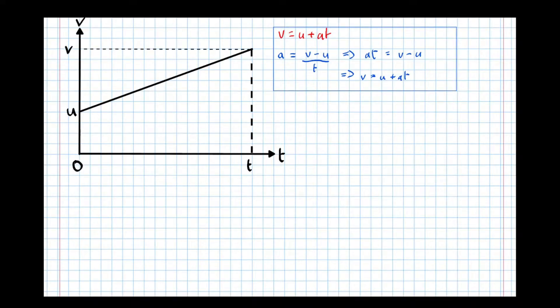So now we're going to have a look at S equals U T plus a half A T squared. With this one, we're going to need to consider the area under the graph, because on a VT graph, it's the area between the graph and the X axis that gives displacement. So we need to calculate this area that I've just shaded yellow.